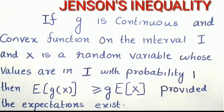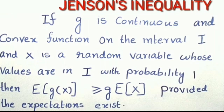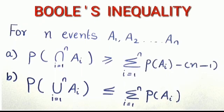Jensen's inequality: If g is a continuous and convex function on interval I, and x is a random variable whose values are in I with probability 1, then E[g(x)] ≥ g(E[x]), provided the expectation exists.